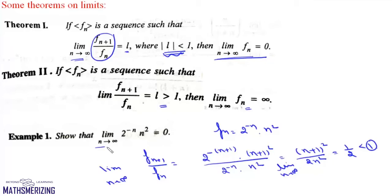That means limit n tends to infinite of f(n), which is 2 to the power minus n into n squared, will be simply 0. And this is how we prove such questions.